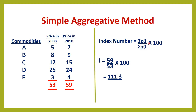Sigma P1 means the sum of all the current year prices, and Sigma P0 means the sum of all the base year prices. Sigma P0 is 53. The index number I equals 59 divided by 53 into 100. The answer is 111.3, which is the index number according to the simple aggregative method.